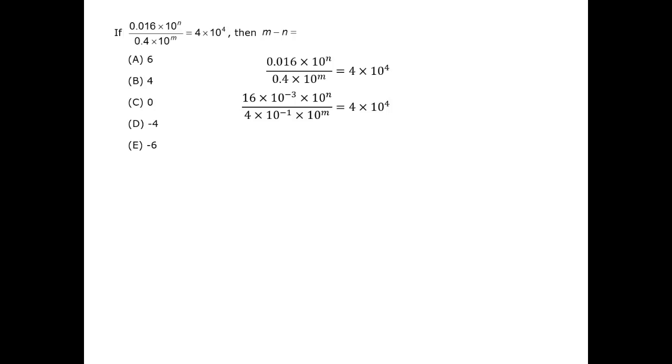In this question, we can convert the numerator and the denominator of the fraction to simpler forms. First, we can put 16 and 4 in simpler terms by stripping out the factors of 10. In both the numerator and the denominator, we have more than one instance of exponents with factors of 10, so we can add those numbers.